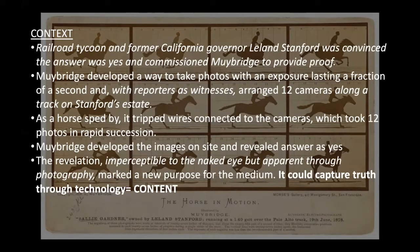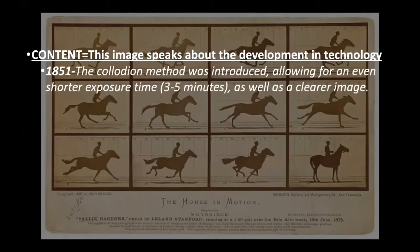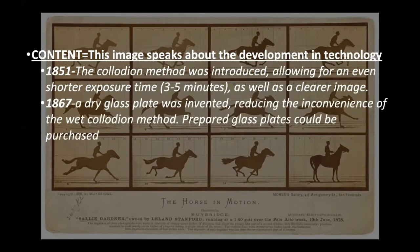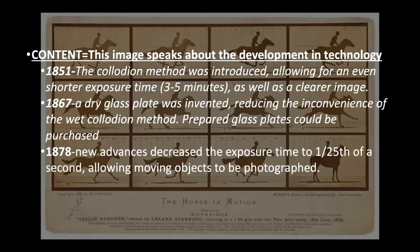That technology becoming the art form is the meaning and content behind this piece. In 1851, a method was introduced allowing for an even shorter exposure time — down to three to five minutes from the original eight hours, creating a very clear image. In 1867, a dry glass plate was invented, reducing the inconvenience of the wet method, and prepared glass plates could be purchased. By 1878, new advanced technology decreased the exposure time to 1/25th of a second in order to capture this horse in motion.